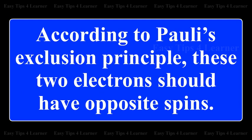According to Pauli's exclusion principle, these two electrons should have opposite spins.